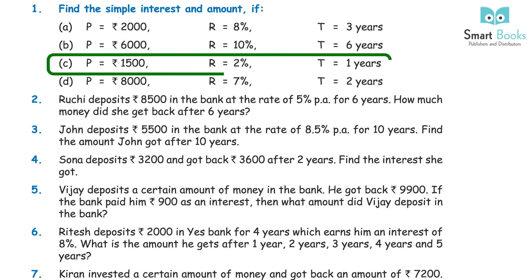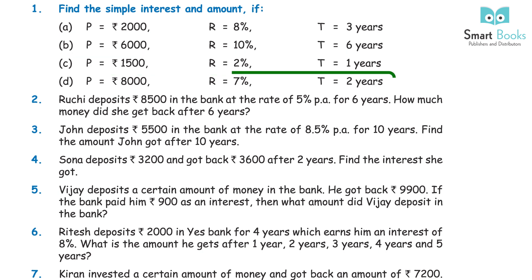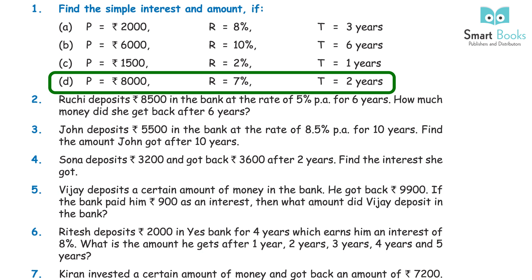(C) P = Rs 1,500, R = 2%, T = 1 year. Answer: Amount = Rs 1,530, Interest = Rs 30. (D) P = Rs 8,000, R = 7%, T = 2 years. Answer: Amount = Rs 9,120, Interest = Rs 1,120.